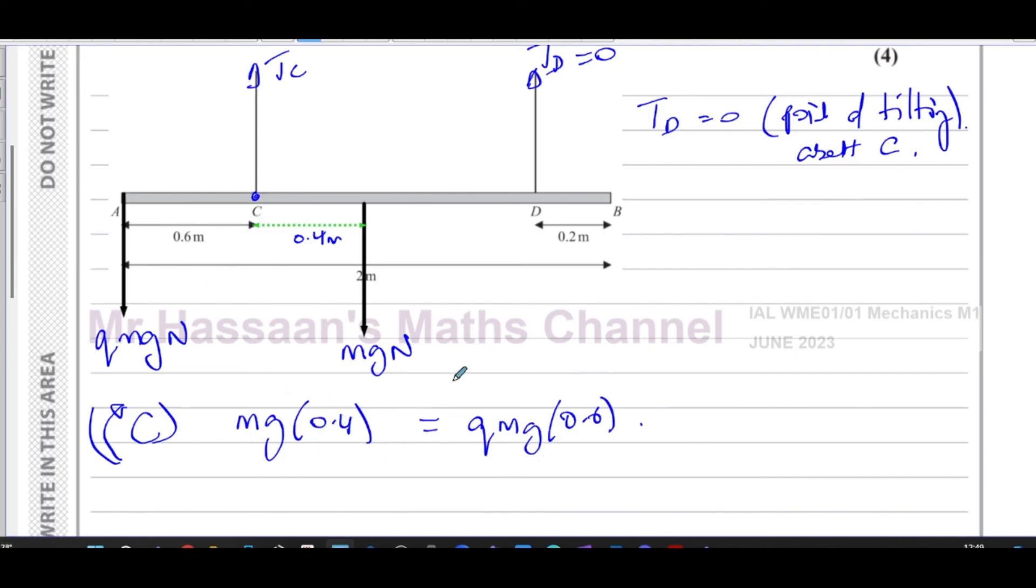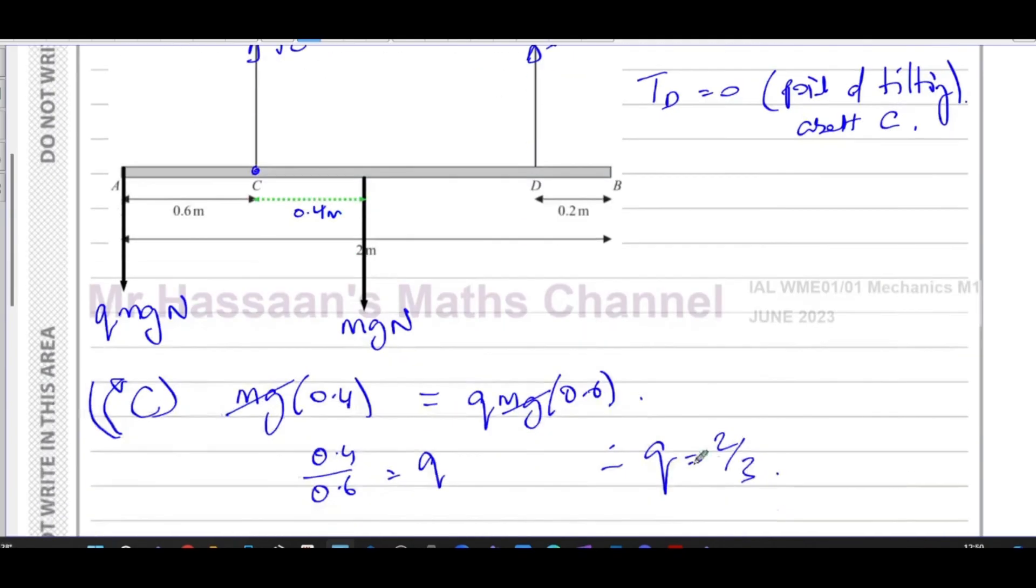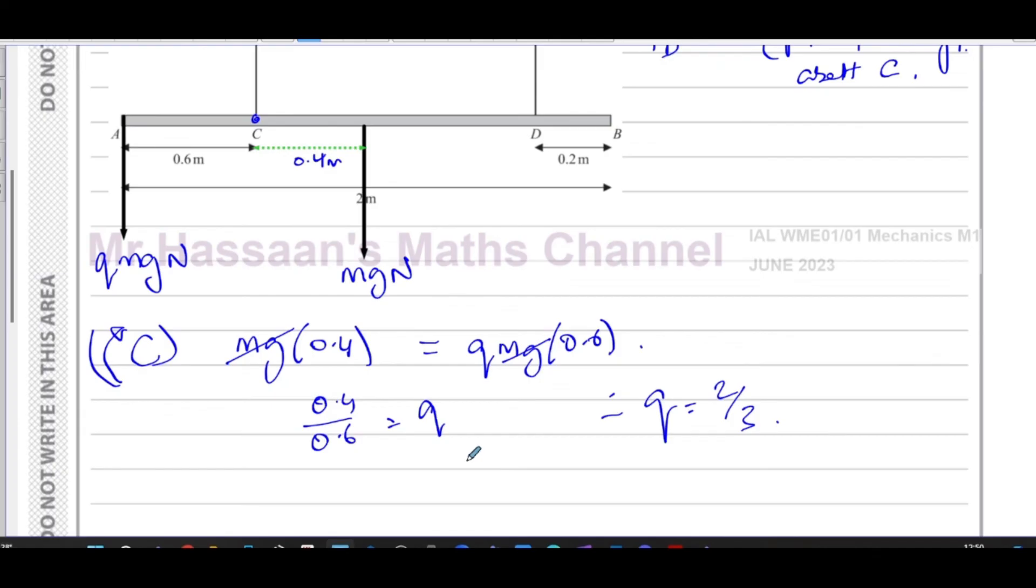With this we can find what Q is. The mg's will cancel out. We're left with 0.4 divided by 0.6 equals Q. Therefore, Q is equal to 4 over 6, which is 2 thirds. So that's the value of Q, the exact value of Q.